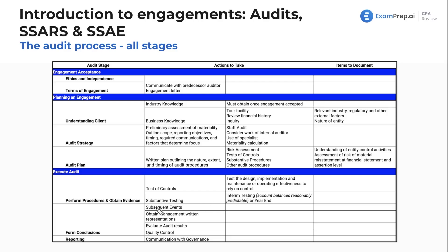For conclusions, we assess subsequent events — there's a whole lesson on that — along with any representations from management, and we evaluate those audit results to make sure we did a quality audit. Then, for reporting, we communicate with those charged with governance and give our end deliverable: whether it's an audit opinion, a report, or a list of findings — that just depends on the engagement.